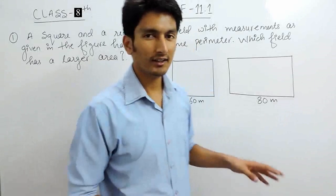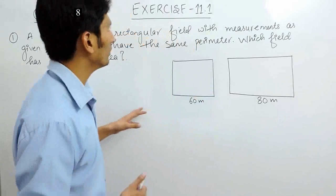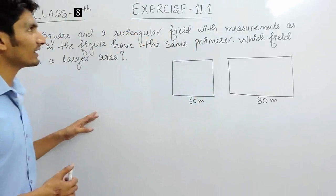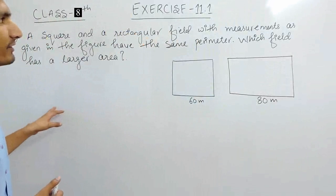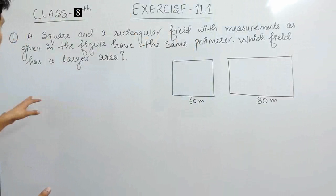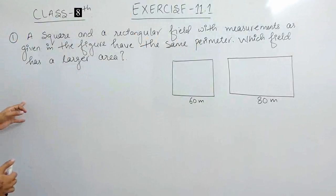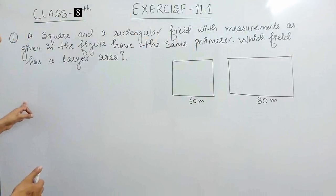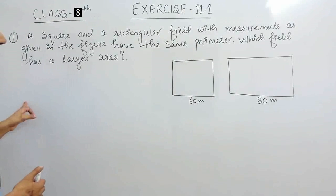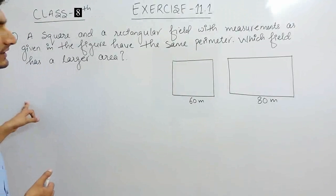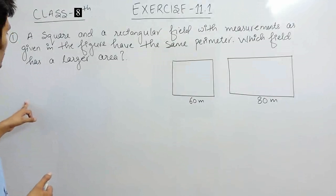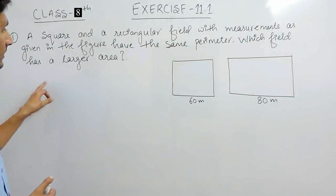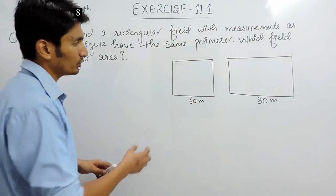Hello everyone. In this video we are going to start exercise 11.1. The first question is: a square and a rectangular field with measurements as given in the figure have the same perimeter. Which field has a larger area?